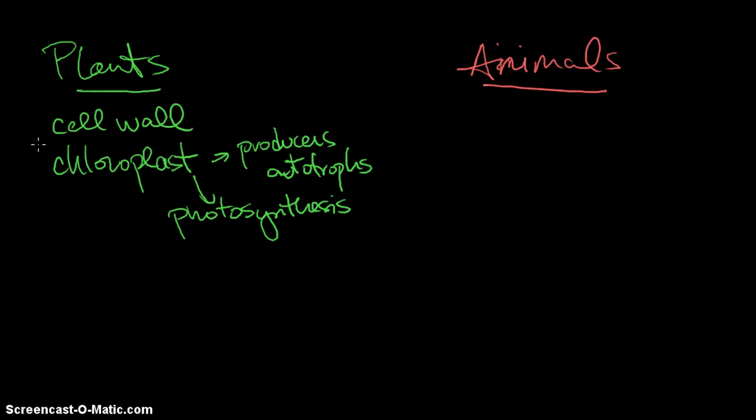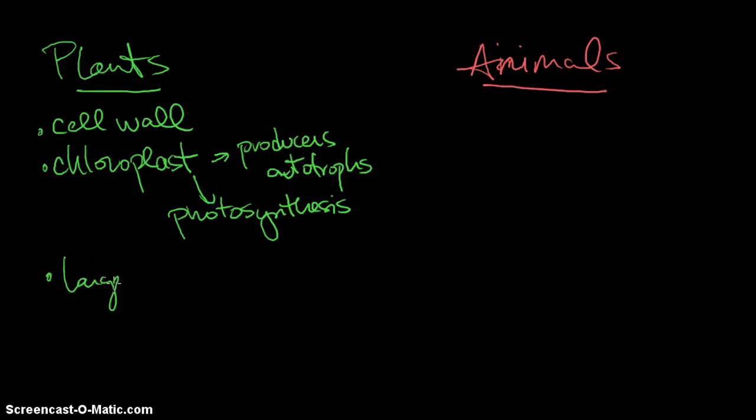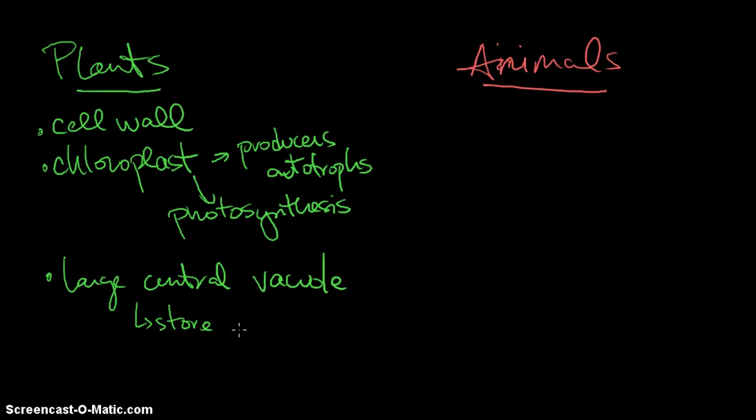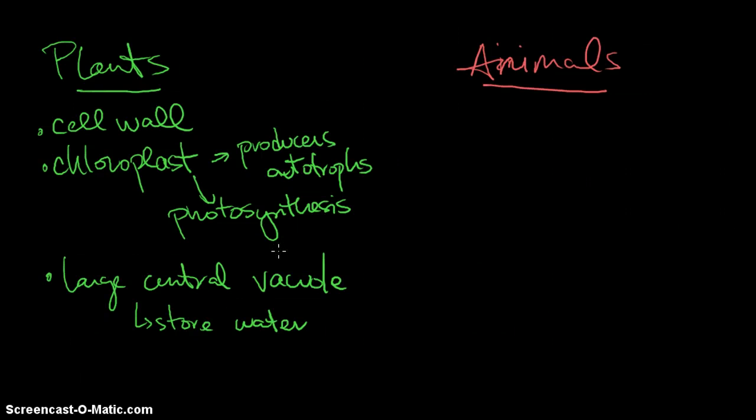And then lastly, plants have a large central vacuole, which is really important for them because they store water in it. Remember, plants can't really move very fast, so when they need water to do photosynthesis, they need to get that resource pretty quickly. And so, each plant cell has a pretty large central vacuole that stores that water for them.